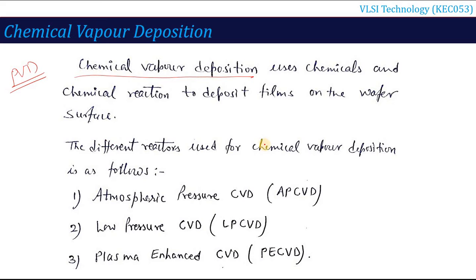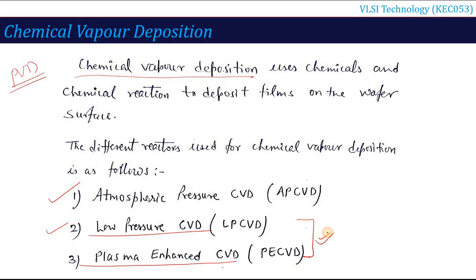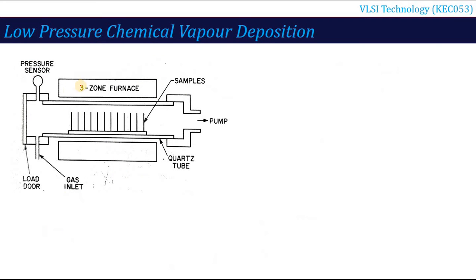What are the different reactors used for this purpose? The first is atmospheric pressure CVD, which we covered in the last lecture. The second one is low pressure CVD and the third one is plasma enhanced CVD. These two we are going to cover in this lecture. So first, let's look at the low pressure chemical vapor deposition method, or LPCVD in short.